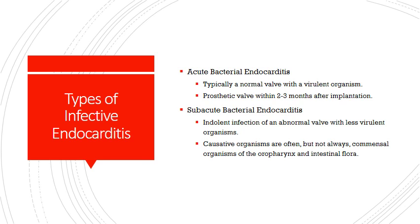There are largely two types of bacterial endocarditis: acute and subacute. Acute bacterial endocarditis typically — not always, but typically — occurs on a normal valve with a virulent organism. A normal valve would be someone without structural issues or a prosthetic valve. It can occur on a normal cardiac valve endothelial surface, or sometimes on a prosthetic valve, typically within two to three months of implantation.